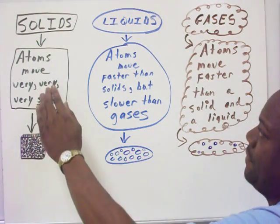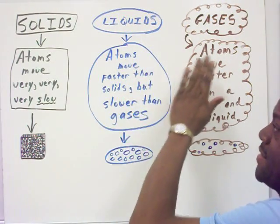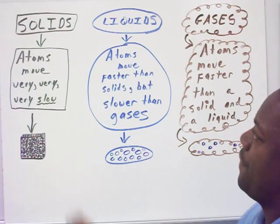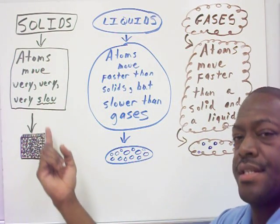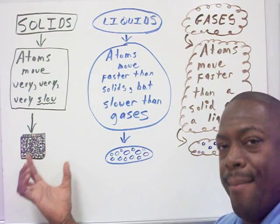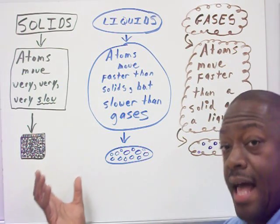Lastly, we have our solids, liquids, and gases. We have a concept map here. With our solids, the atoms move very, very, very slow. The atoms are more compact together, therefore making a solid solid.